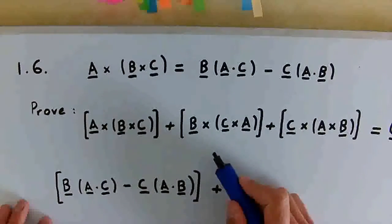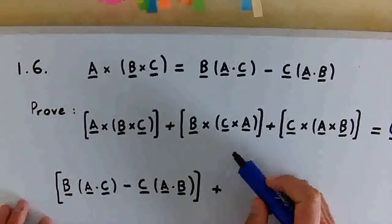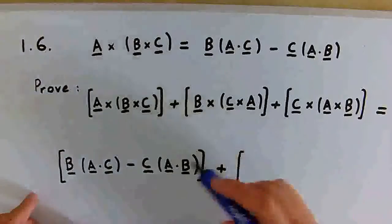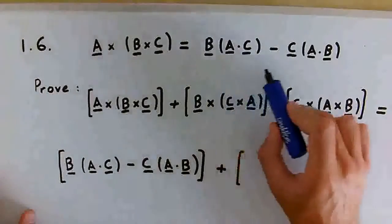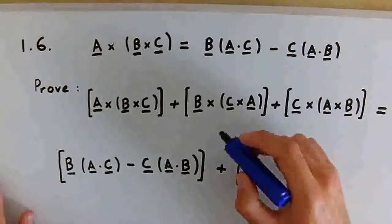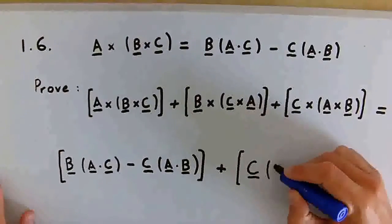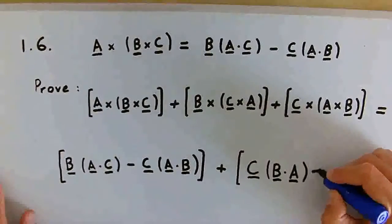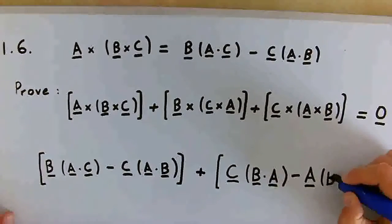Now this next one, even though it's using the same format but with the vectors in a different order — because the order is different in this cross product, it's not A cross (B cross C) anymore, it's B cross (C cross A) — we are still using the BAC minus CAB rule, it's just it will read in a slightly different order. This in fact gives C times (B dot A) minus A times (B dot C).